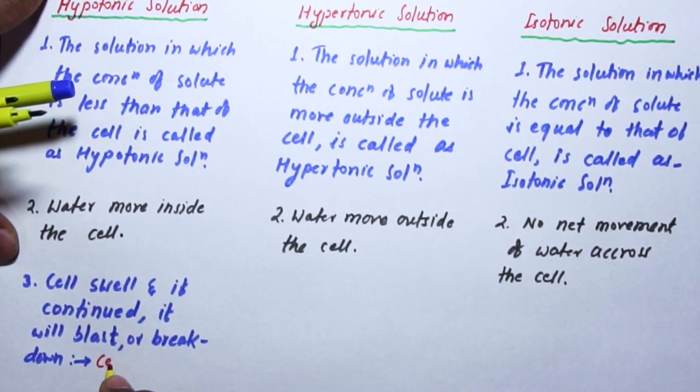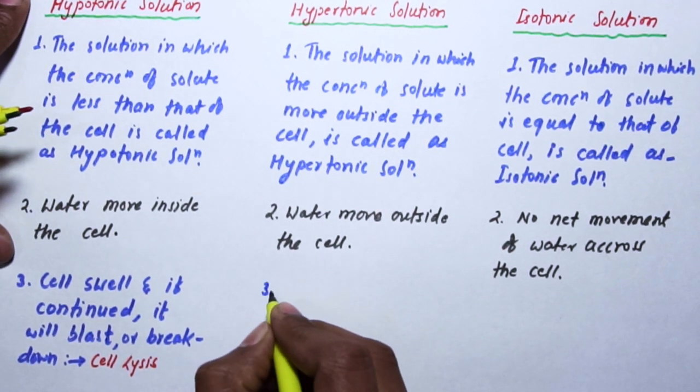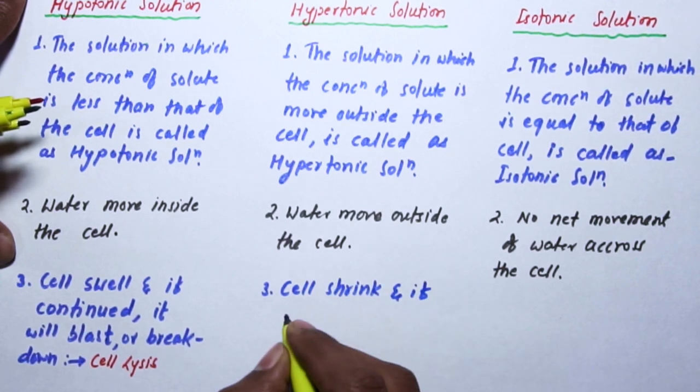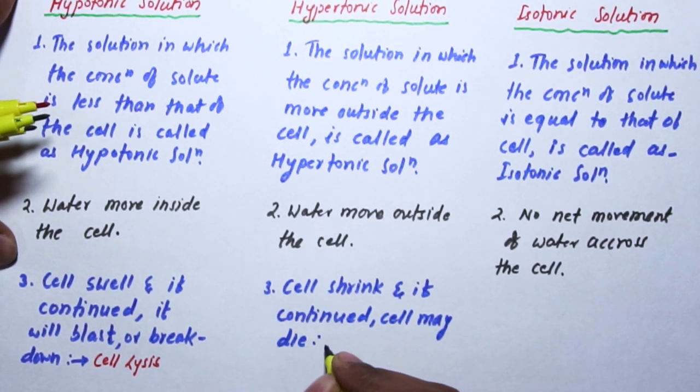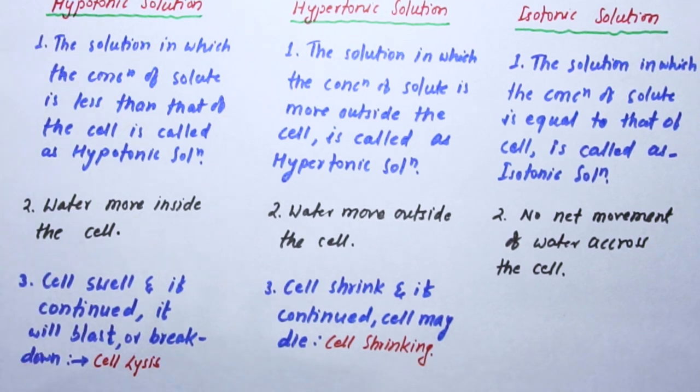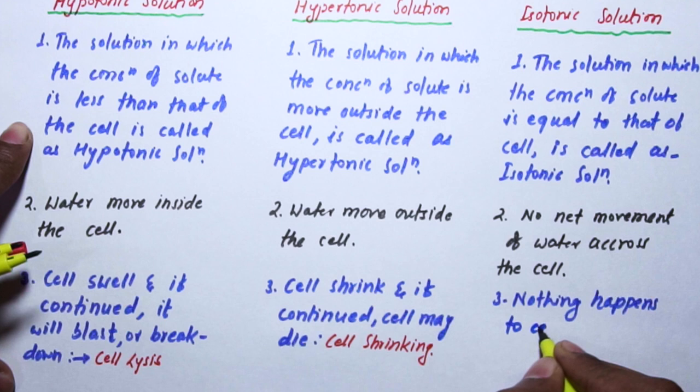In hypotonic solution, the cell will swell, and if continued, it will blast or break down—that is called cell lysis. In hypertonic solution, the cell will shrink, and if continued, the cell may die. This process is called cell shrinking. In isotonic solution, nothing happens to the cell; the cell remains normal.